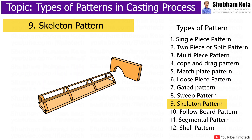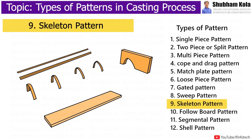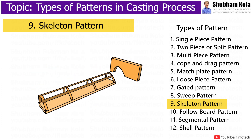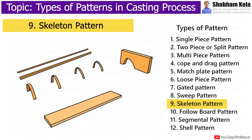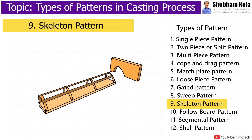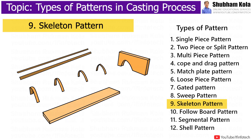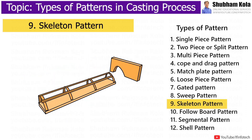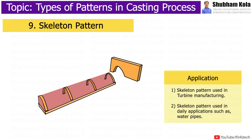Skeleton pattern is used for large simple castings. Here, a skeleton-like structure is made by using simple pattern sections. This will save time and material. It is just like sweep pattern. These are simple wooden frames that outline the shape of parts to be cast and are also used as a guide by a moulder in hand shaping of mould. This type of pattern is also used in pit or floor moulding. The skeleton pattern is used in turbine manufacturing.